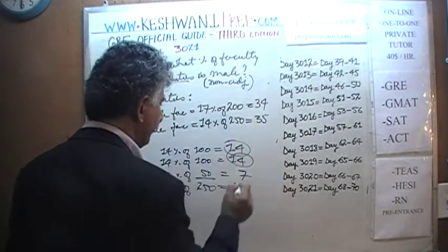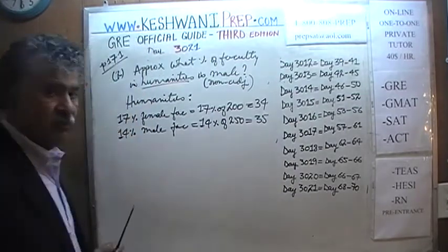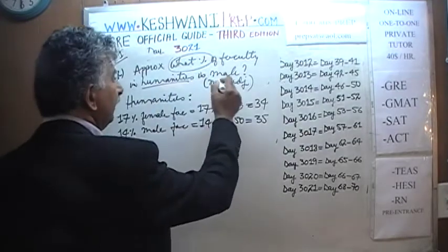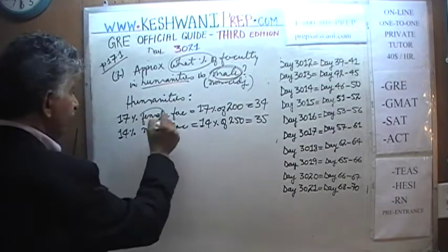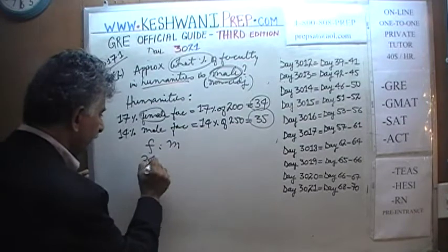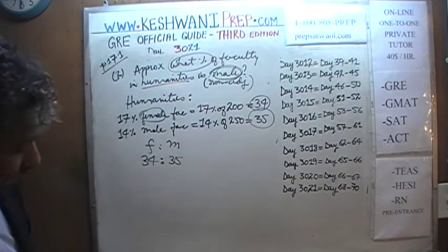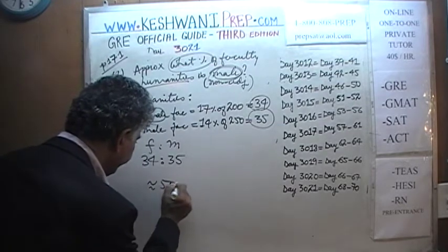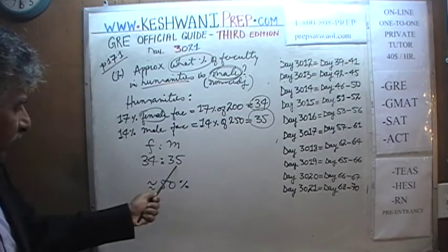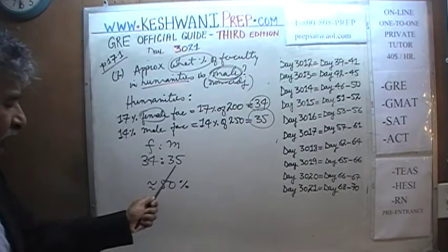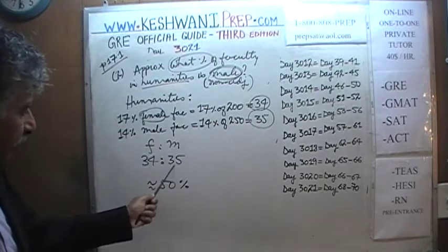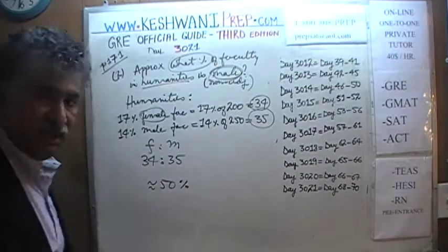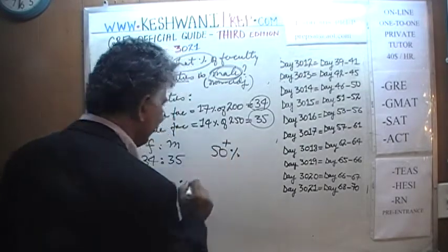Now we can answer the question: what percentage of faculty is male? We have 34 female and 35 male. If we had 34 males it would be exactly 50-50. Since we have 35 males, they are slightly above 50% of the combined faculty. So the answer is something slightly above 50%.